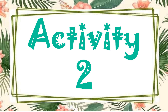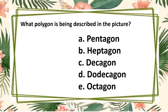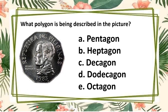Let's proceed with activity two. What polygon is being described in the picture? Picture number one — let us count the sides of the polygon: one, two, three, four, five, six, seven, eight, nine, ten. The answer is letter C, dodecagon.